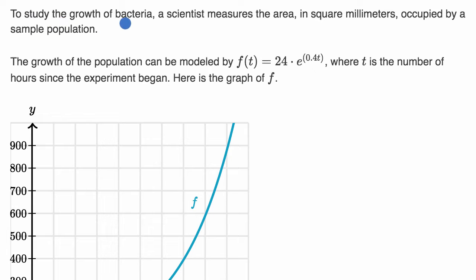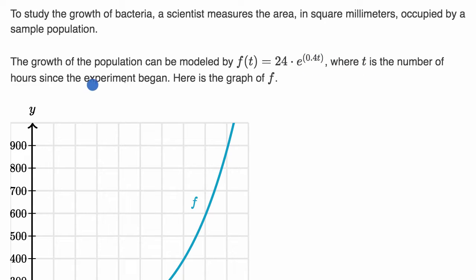We're told to study the growth of bacteria. A scientist measures the area in square millimeters occupied by a sample population. The growth of the population can be modeled by f(t) = 24 times e to the 0.4t power, where t is the number of hours since the experiment began. The output of this function is the number of square millimeters after t hours.